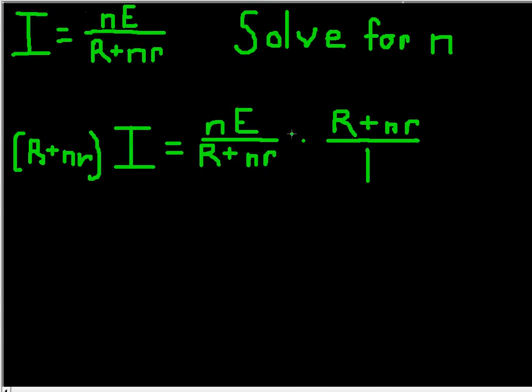And so basically, these are going to cancel out, just like in the tutorial before. And so nE over 1 is just nE. But on this side, what we're going to do is we're going to distribute the I.